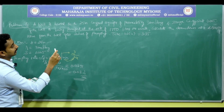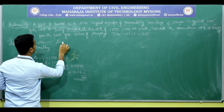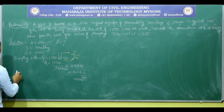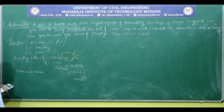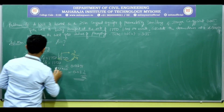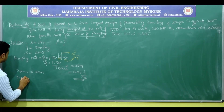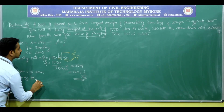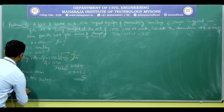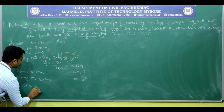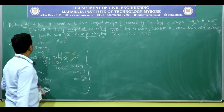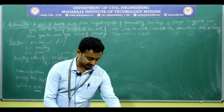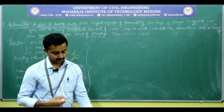Next data: calculate the drawdown, small s, at a distance of 100 meters. Pumping time t equals 20 hours. Well function W(u) equals 3.35. These are the given data. We need to calculate drawdown s. We also need to convert K from meters per day to meters per second.